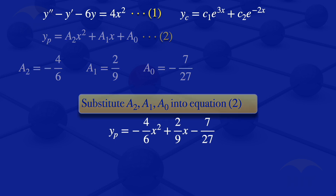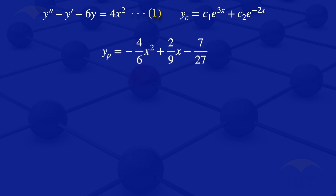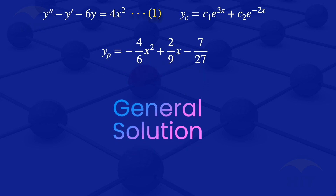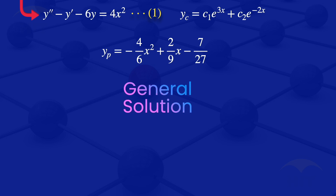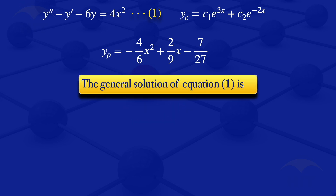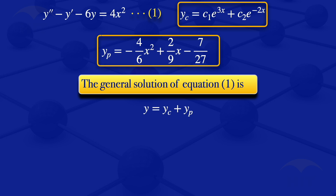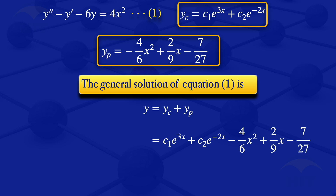After obtaining the particular solution, we find the general solution of equation 1. The general solution is the complementary solution plus the particular solution. So the general solution is: c1·e^(3x) plus c2·e^(minus 2x) minus (4/6)·x squared plus (2/9)·x minus 7/27. That is the general solution of this non-homogeneous ODE.